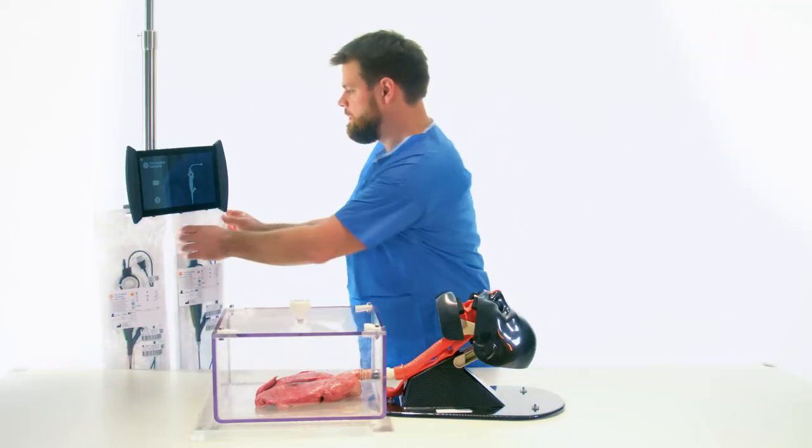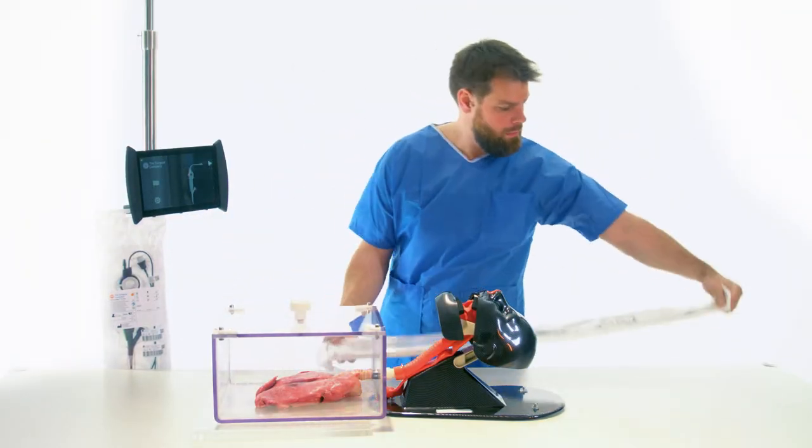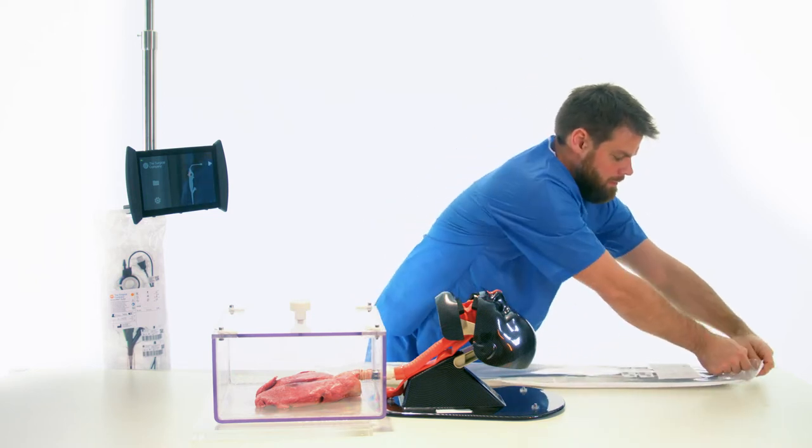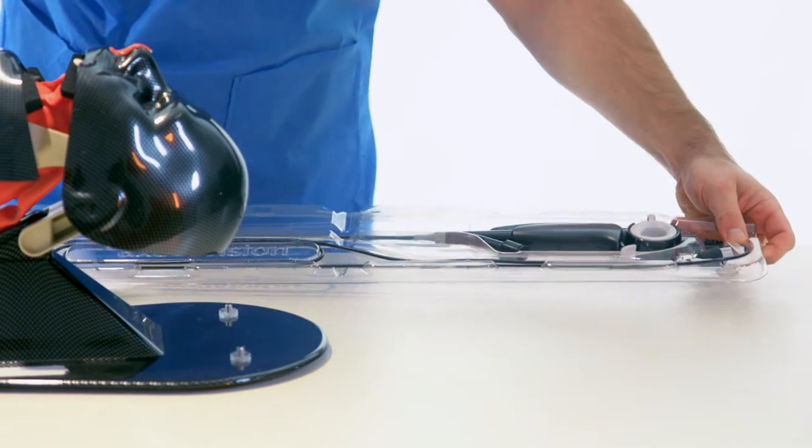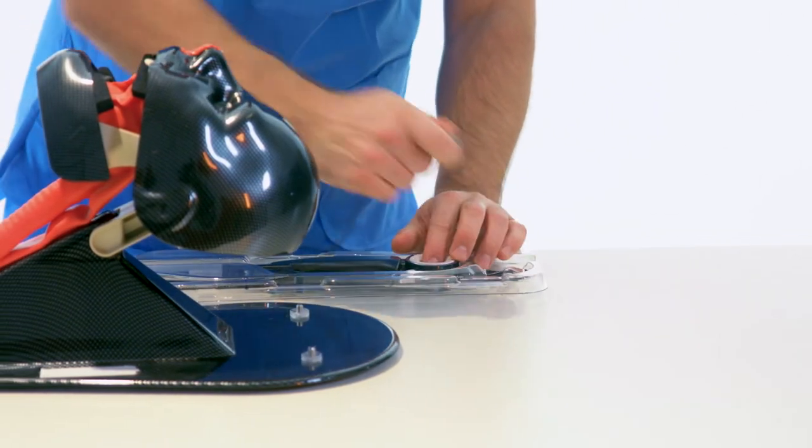For this procedure, a BroncoFlex Vortex with a 2.8 mm working channel is used for powerful suction. There are no protective covers or accessories that need to be removed.